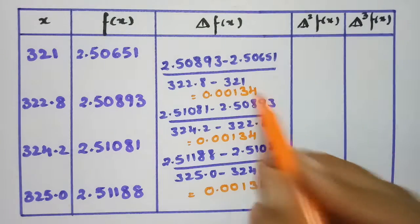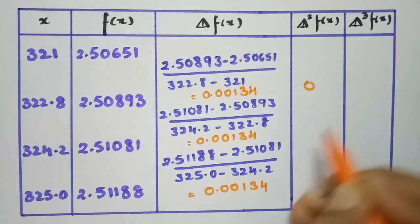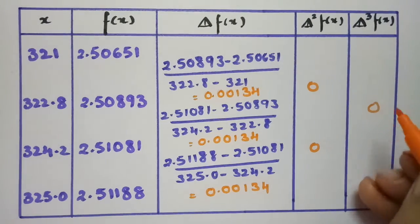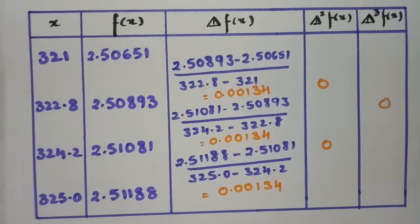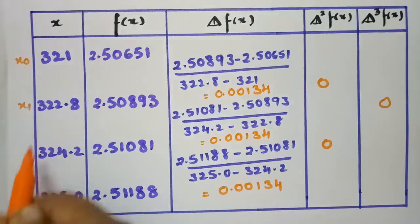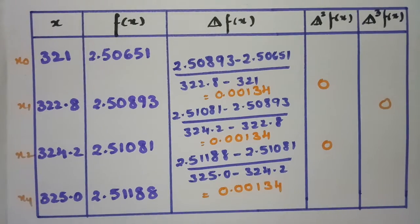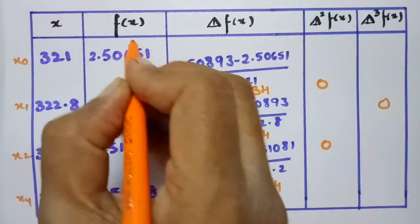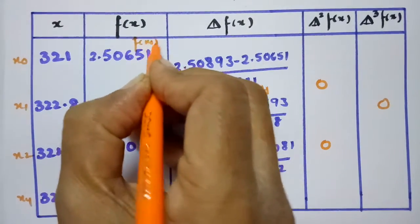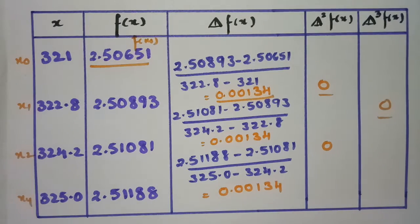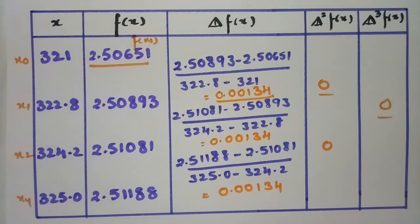Since all first divided differences are the same (0.00134), subtracting them gives 0 for all second divided differences, and the third divided difference is also 0. We label the points x₀, x₁, x₂, x₃ with corresponding values f(x₀), and we need the values from this table to substitute into the Newton divided difference formula.